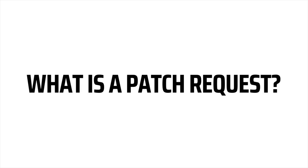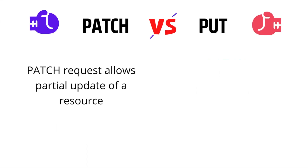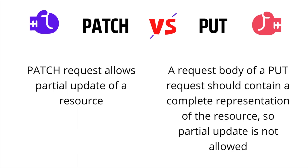So what is a PATCH request? A PATCH request is one of the HTTP request methods, which is used when we want to update an existing resource. You might know that the HTTP PUT request method is also used to update an existing resource. So what's the difference between PUT and PATCH? One of the main differences is that a PATCH request allows a partial update of a resource. This is not the case with a PUT request, because the request body of a PUT request should contain a complete representation of the resource.